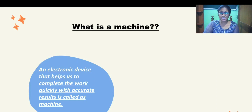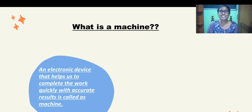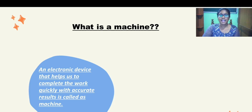What is a machine? Do you know what is a machine? A machine is an electronic device that helps us to complete our work. We can say that a machine makes our work easier, faster, and accurate.